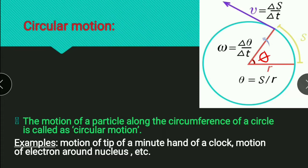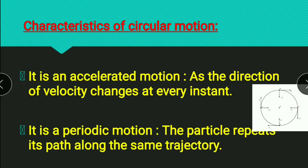Let's discuss more about circular motion. There are two characteristics of circular motion. The first one is that it is an accelerated motion, because the direction of velocity changes at every instant.